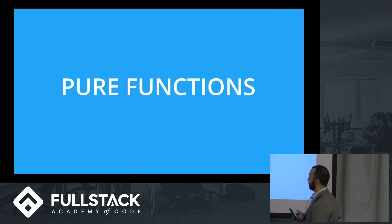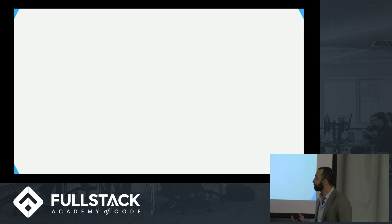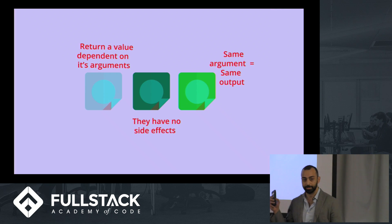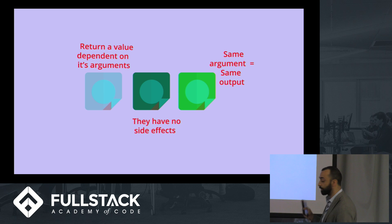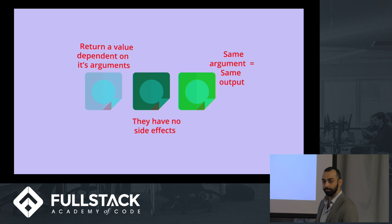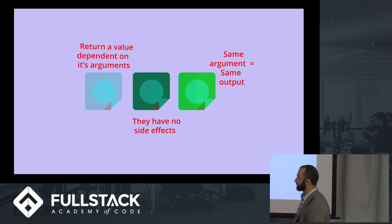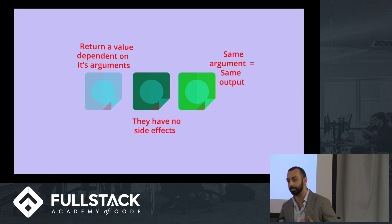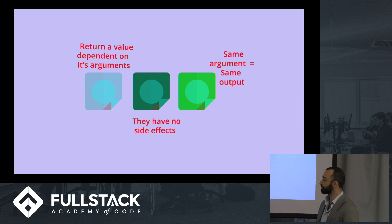Let's talk about what pure functions are. What makes a pure function is that its value is dependent solely on its arguments. They have no side effects — no network calls or anything like that. The same argument will always produce the same output. This is very important to Redux because one of the big things Redux does is check whether the new state is similar to its old state, and when it does have a new state, it triggers a re-rendering.